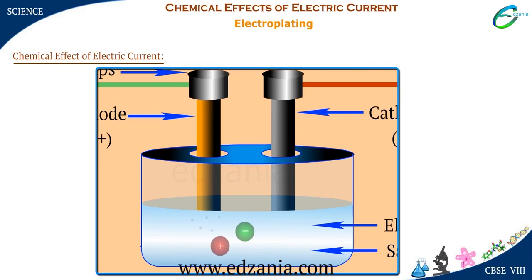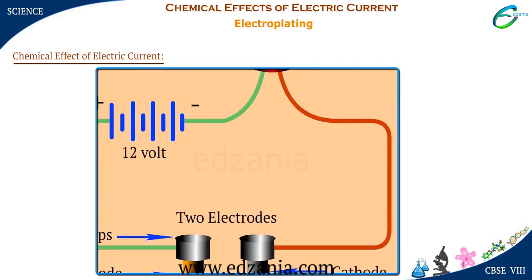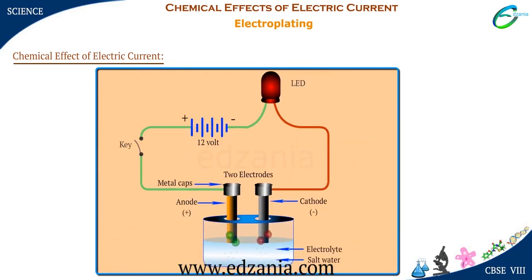Oxygen bubbles are formed on the electrode connected to the negative terminal of the battery, that is, the cathode. When electric current passes through an electrolyte, a chemical reaction takes place at the two electrodes in the solution. This process is called electrolysis. The resulting effects of electrolysis are called chemical effects of electric current.